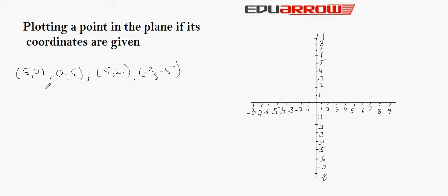Let's plot first the point (5, 0). Here, x coordinate is 5 and y coordinate is 0. First, we will see for x coordinate — 5 is here. Now, for y coordinate that is 0, we will see perpendicular to the x axis along with the y axis — 0 is here. So, the point will be plotted here, that is (5, 0).